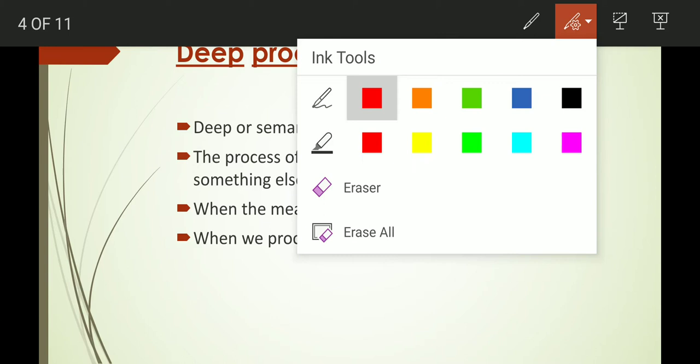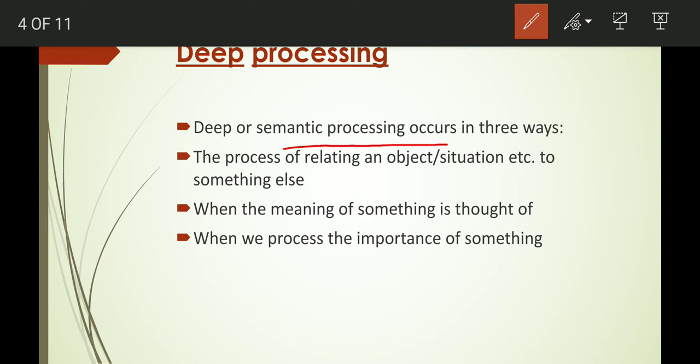Deep processing — also called semantic processing — occurs in three ways. The first is the process of relating an object or situation to something else. For example, if your mother gifted you a watch, whenever you see a watch you remember her. Similarly, if you went to a coffee shop with a friend, even when you go there alone the next time, you still remember that friend. That is relating an object or situation to something else — a deeper level of processing.